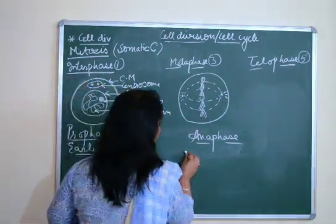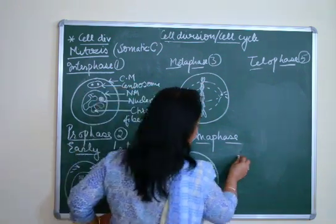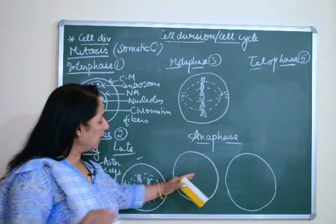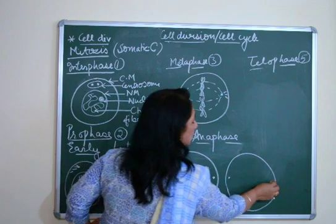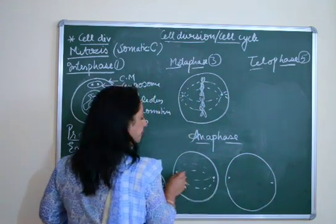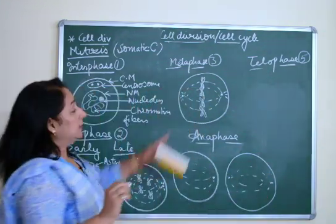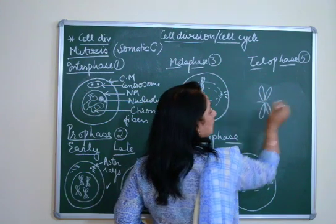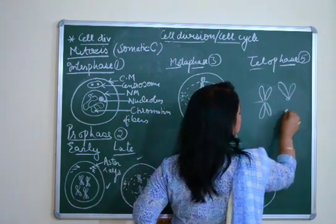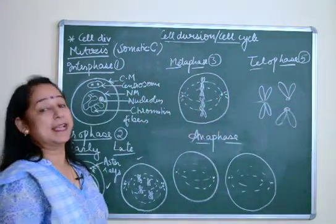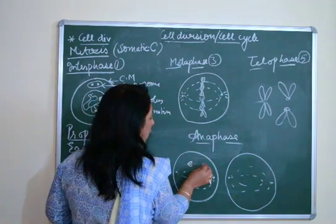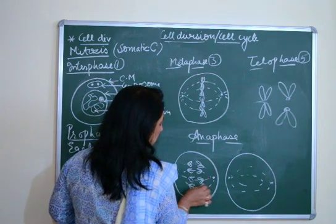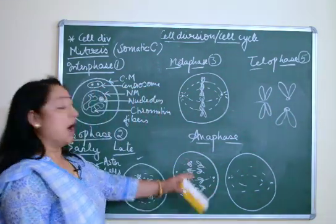After metaphase, the cell enters anaphase — early and late. In early anaphase, the centrioles and spindle fibers remain. The centromere separates and the chromosomes split into two chromatids. So from four chromosomes, splitting occurs — the chromosomes divide into chromatids in early anaphase.